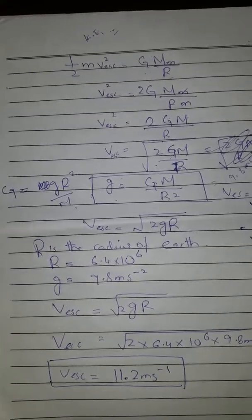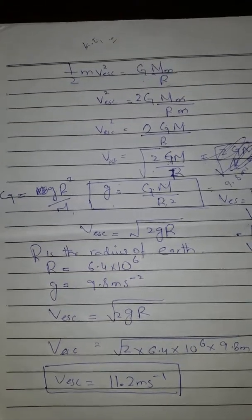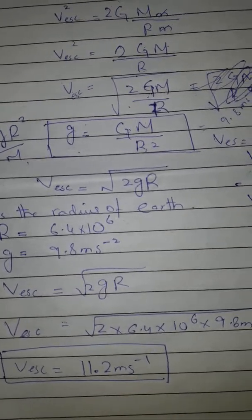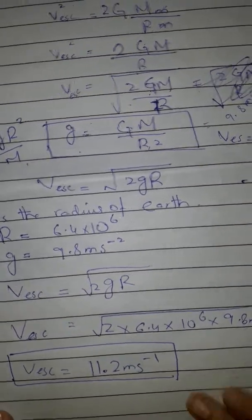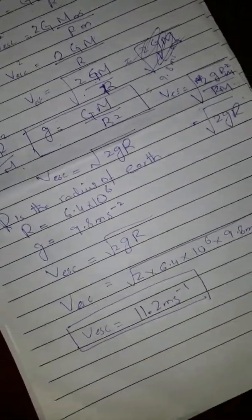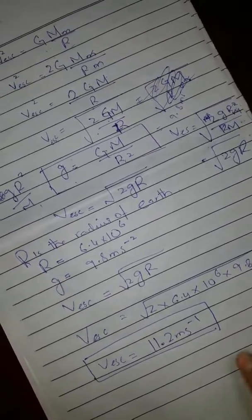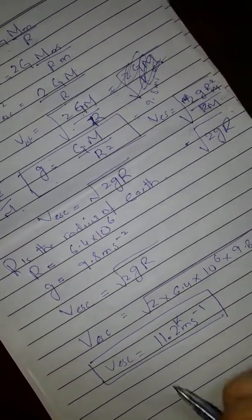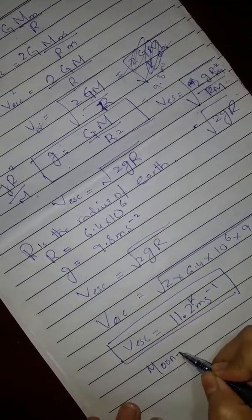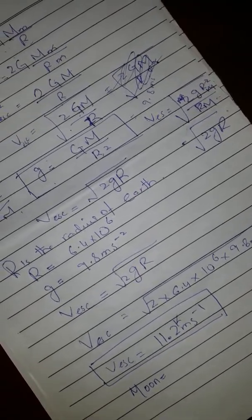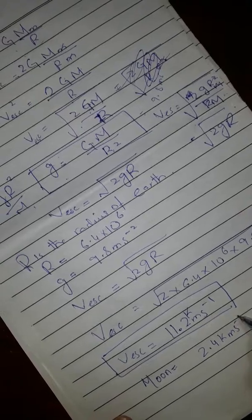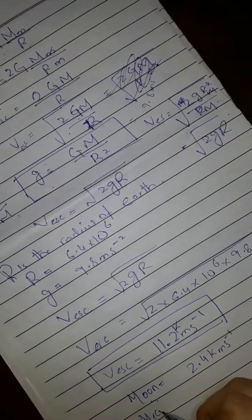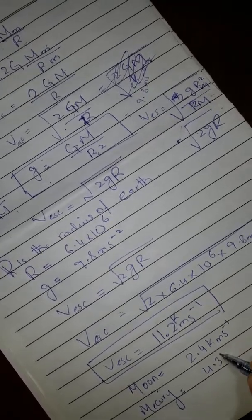The escape velocity of the earth is approximately 11.2 km/s. Whenever any body wants to go out from the earth, it needs a velocity approximately equal to 11.2 km/s to escape. We also have some information about the escape speeds of many other bodies. For the moon, the escape velocity is 2.4 km/s. For Mercury, the escape velocity is 4.3 km/s.